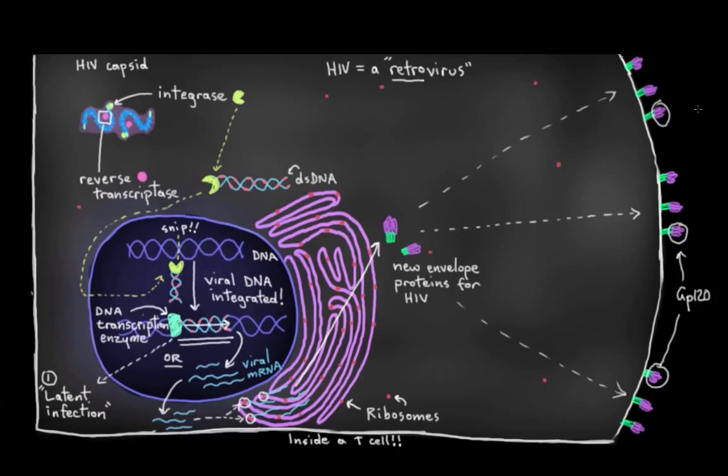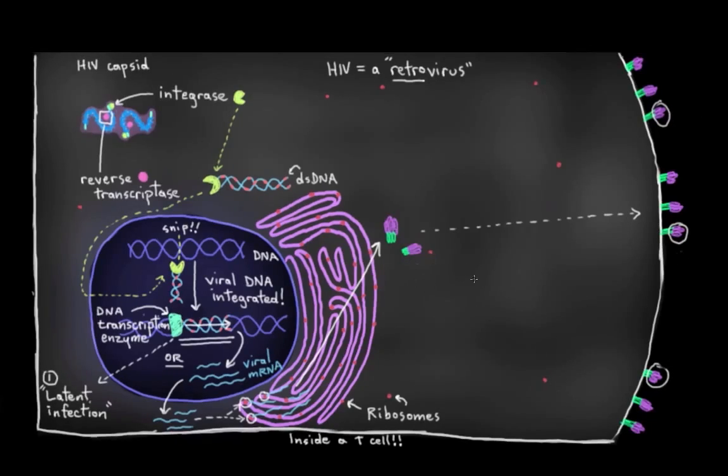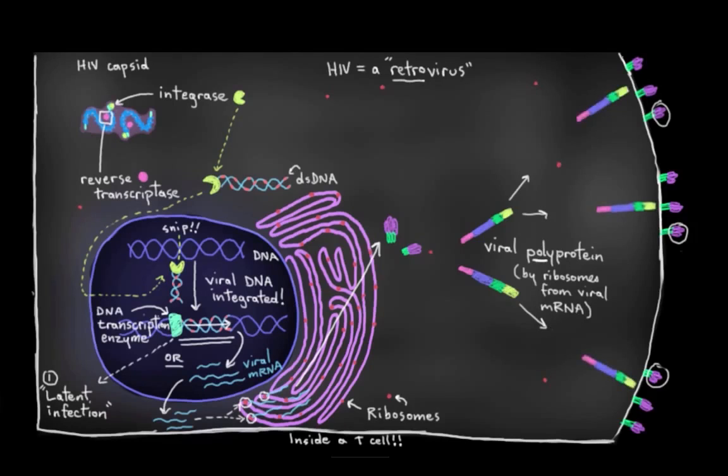And while this is happening, another key viral protein is being made at the same time. Actually, it's a viral polyprotein. Poly because it's essentially multiple different viral proteins laid out end to end on one long protein strand. So, these will include those viral enzymes we talked about earlier, right? Reverse transcriptase, integrase, as well as some other proteins that the virus needs to be infectious. So, all of these long viral polyproteins, along with some viral RNA, they also get brought up to the surface, to the areas where all the envelope proteins have clustered together.